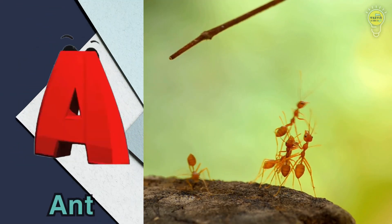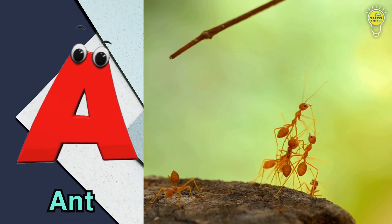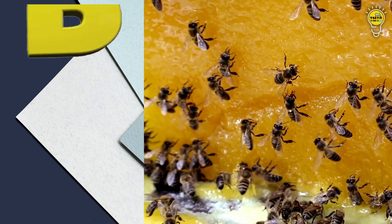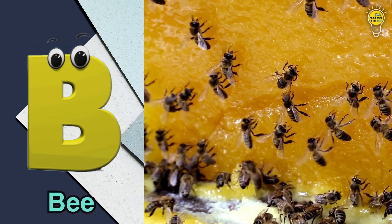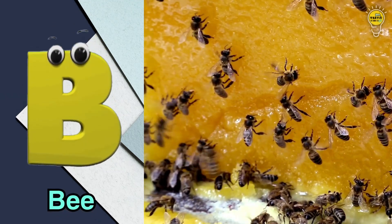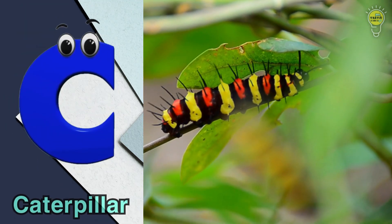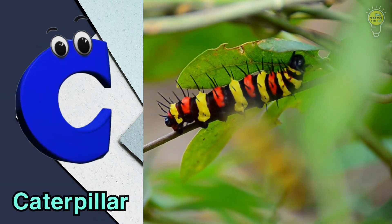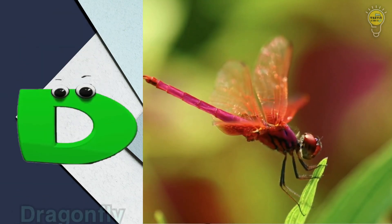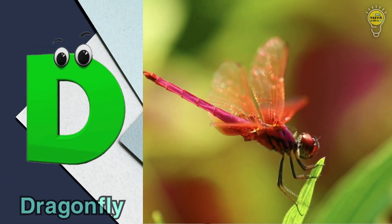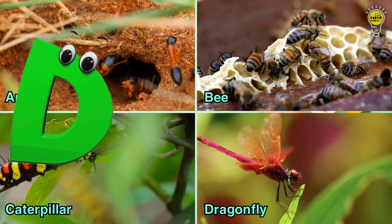A is for ant, a, a, ant. B is for bee, b, b, bee. C is for caterpillar, c, c, caterpillar. D is for dragonfly, d, d, dragonfly.